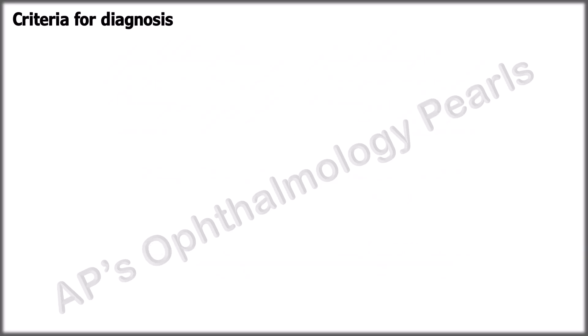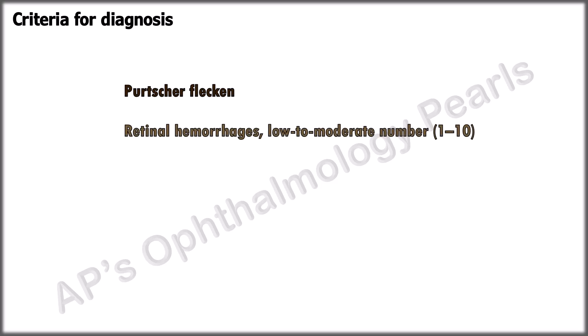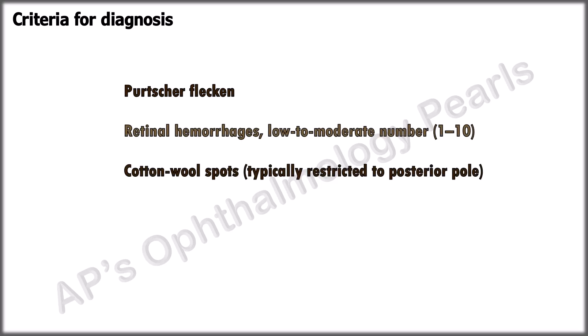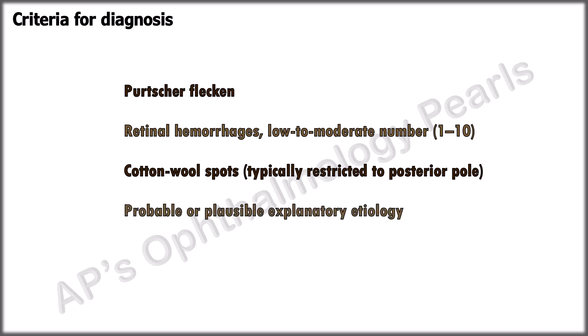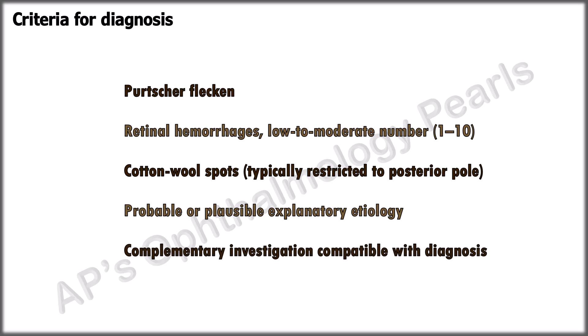Miguel suggested five criteria of which three should be present for the diagnosis of Purtscher retinopathy: Purtscher fleckens, retinal hemorrhages, cotton wool spots typically restricted to the posterior pole, a probable or plausible explanatory etiology, and complementary investigations compatible with the diagnosis. Also, there should be no evidence of direct ocular trauma.